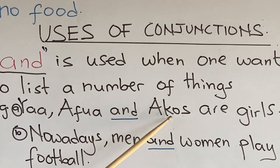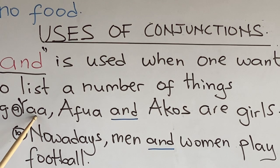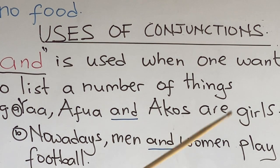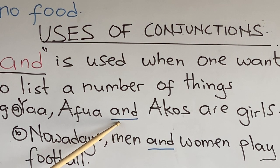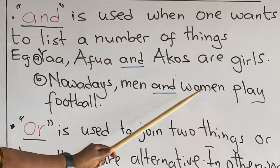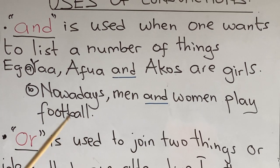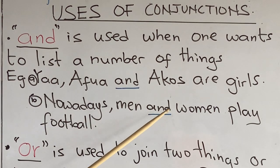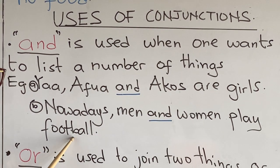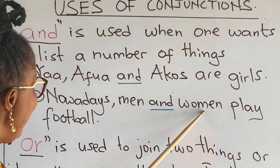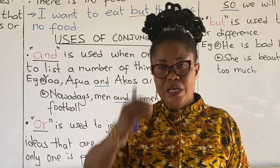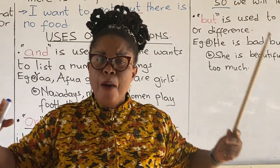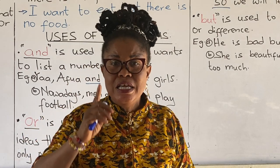Ama and Abena are girls. The two things have been joined together by 'and'. Example B: Nowadays, men and women play football. Men and women have been put together — two things put together by 'and'. So when things are listed or put together, 'and' is mostly used.